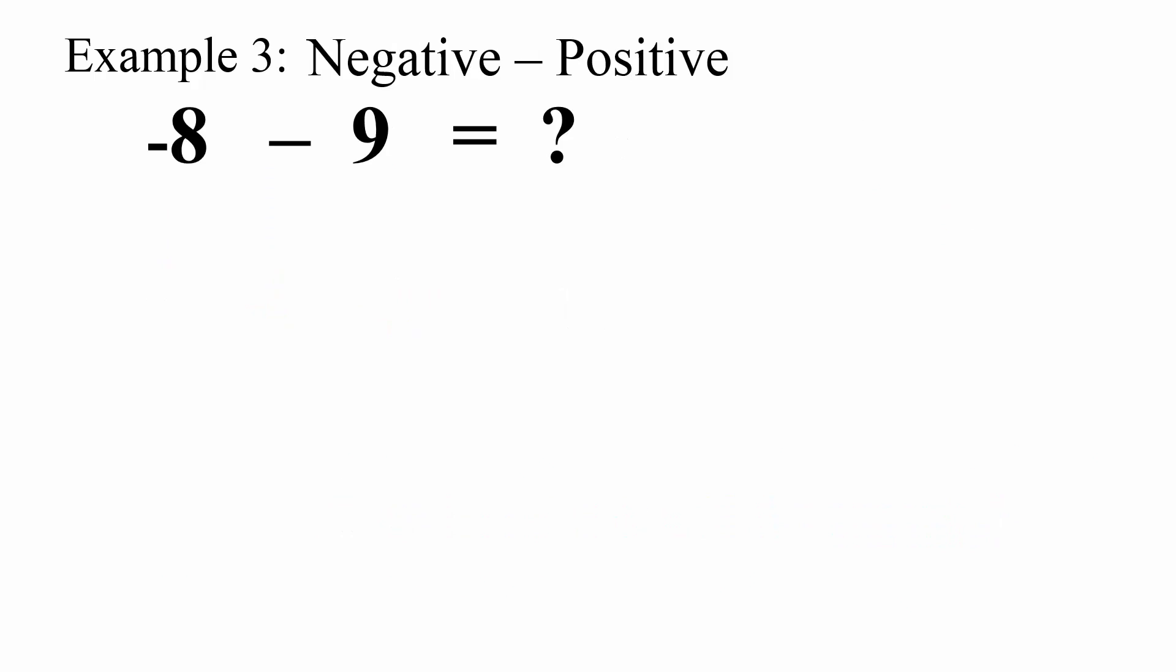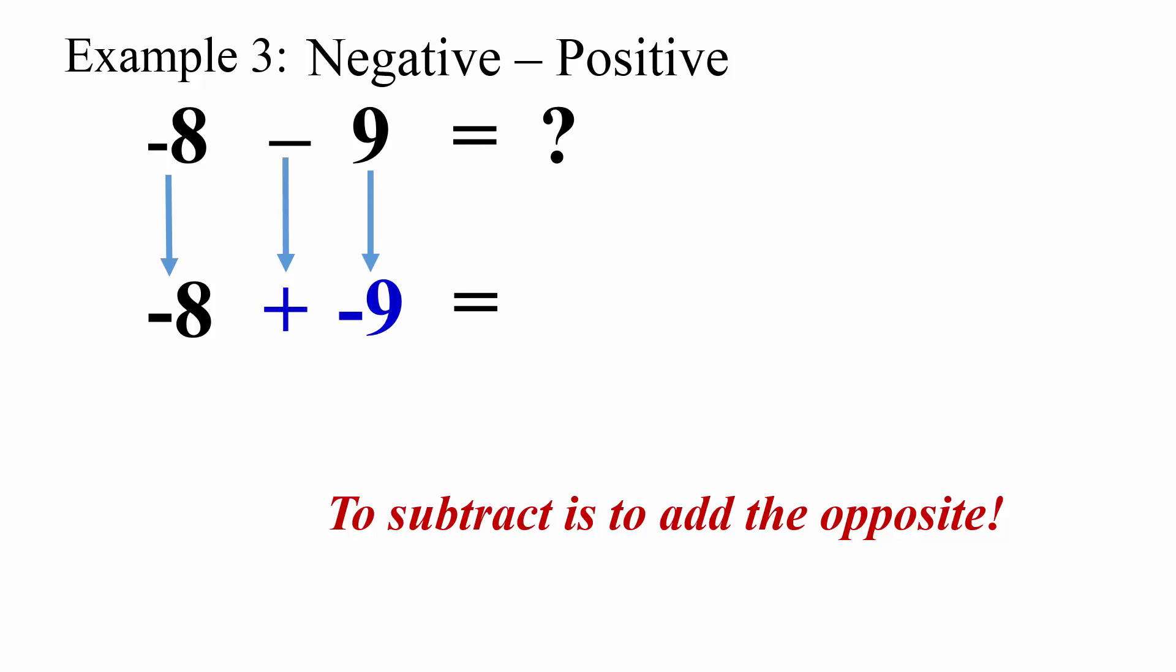Example 3: negative 8 subtract 9. Negative 8 stays the same. Subtraction become addition. The opposite of positive 9 becomes negative 9. Negative 8 plus negative 9 equals negative 17.